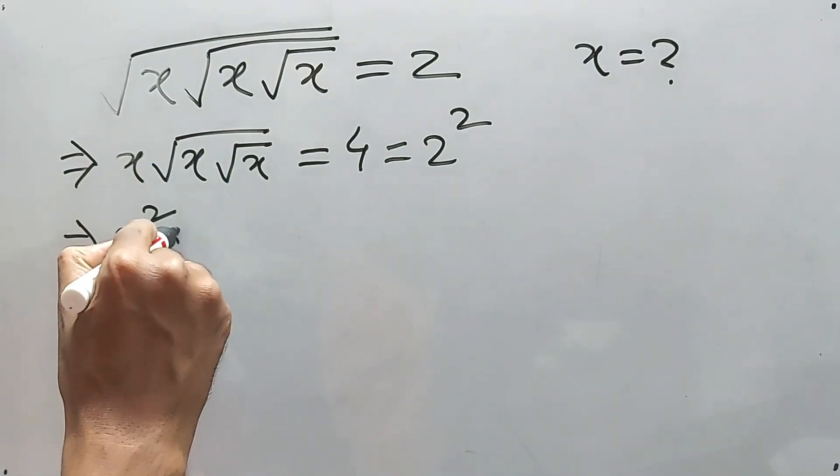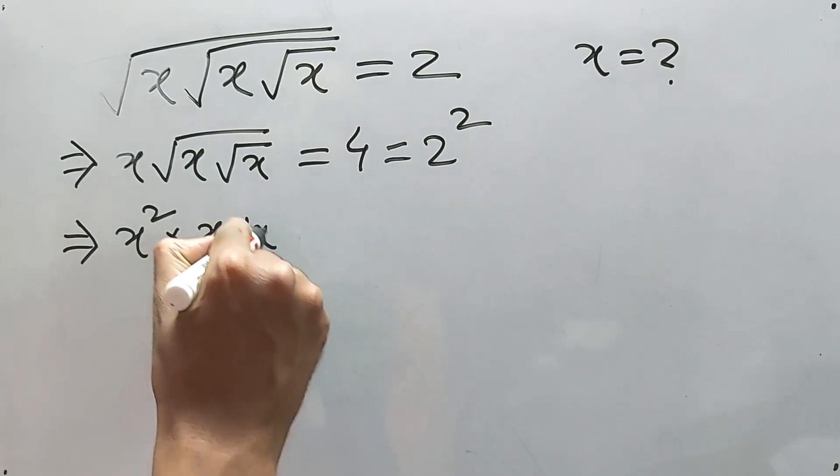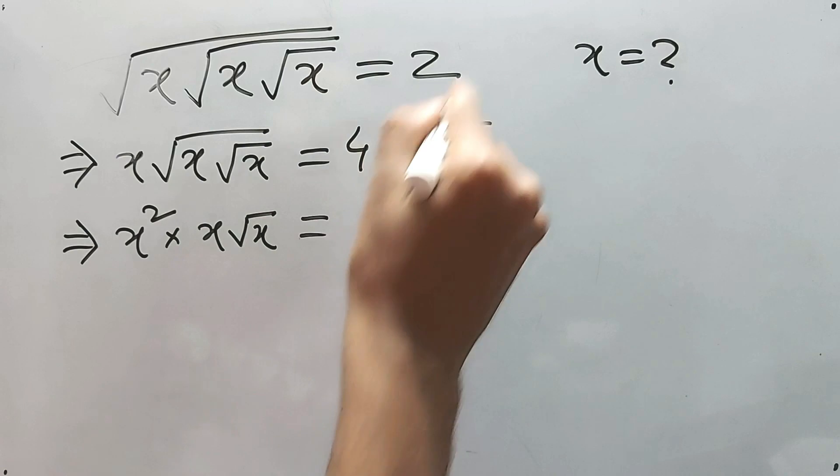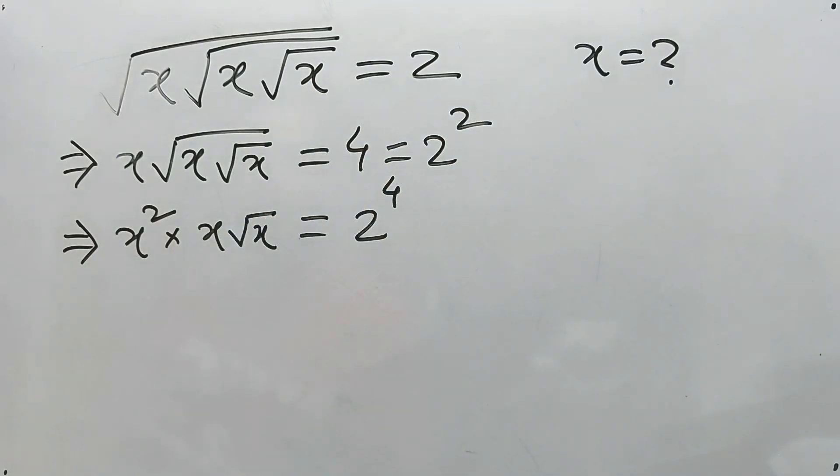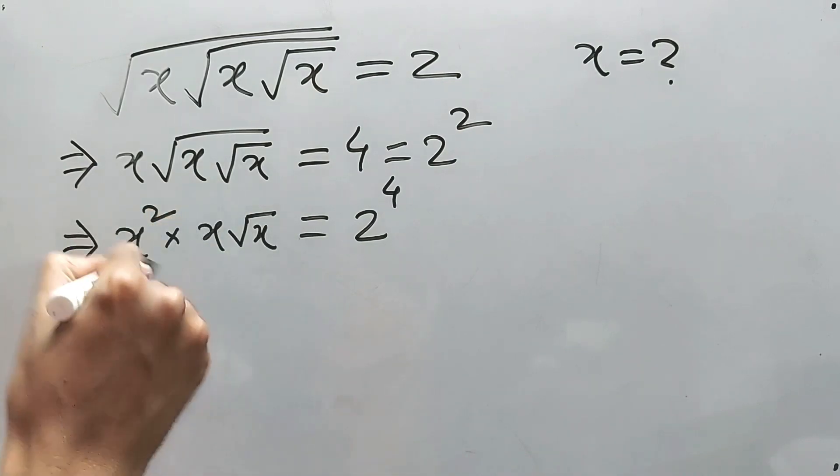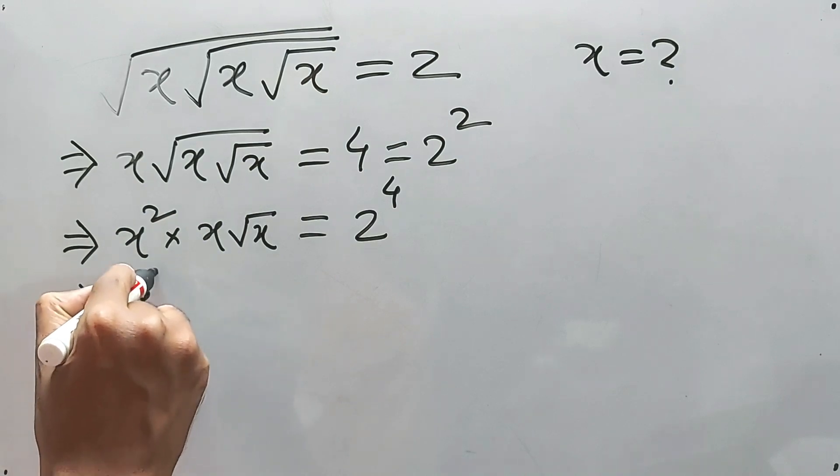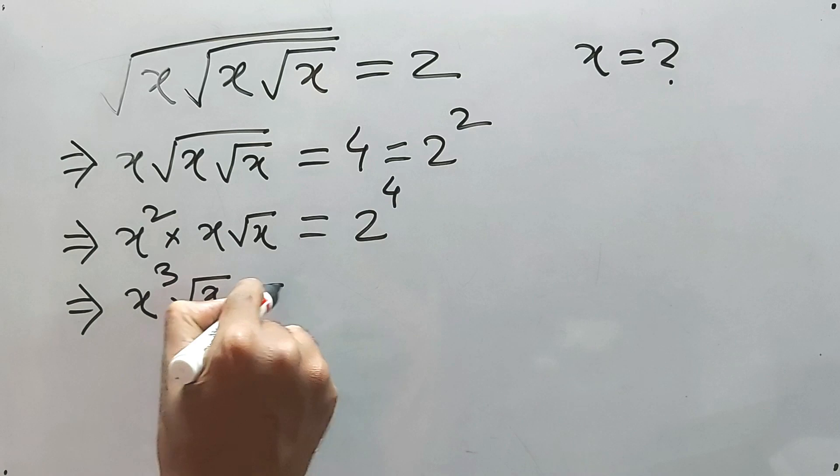will be x square into x. Yeah, definitely. But this one will be again inside, right? And square means two to the power of four, right? Simple. Again, one more square is required because, well, this is two plus one means three. So this is x cube and this is square root of x is equal to two to...